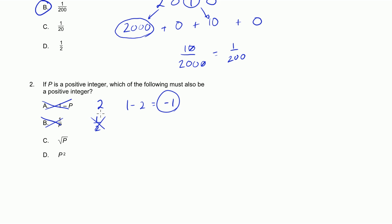I'm just going to keep running with my number 2. If it doesn't work for number 2, it's definitely not going to work for any positive integer. So if P is 2 right here, then the square root of 2, once again, not a positive integer.